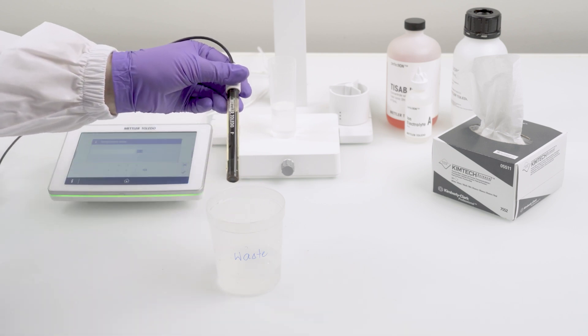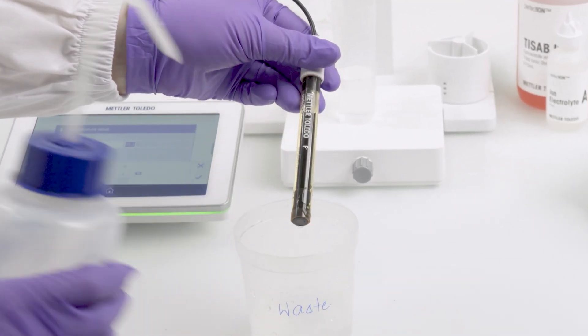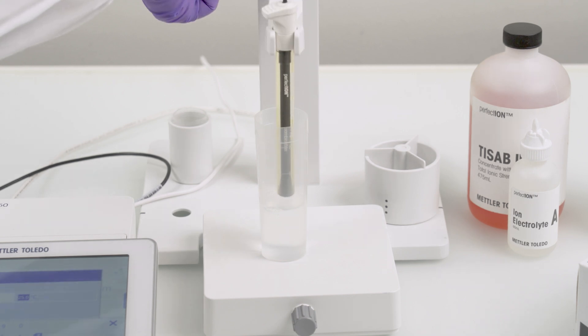For polymer membrane sensors, rinse properly with a 50% alcohol water solution. Soak the sensor in the appropriate standard overnight or for several days.